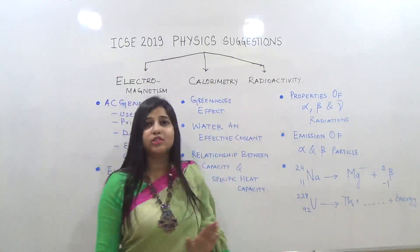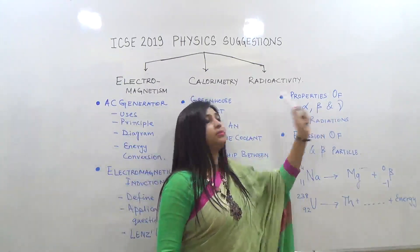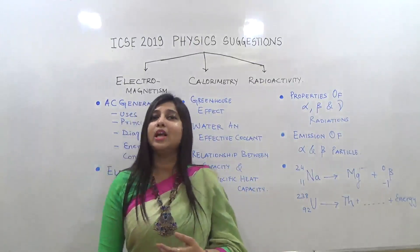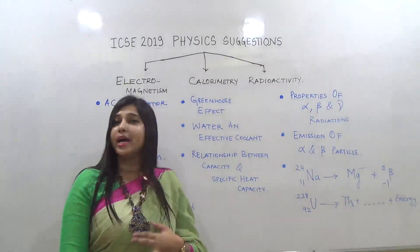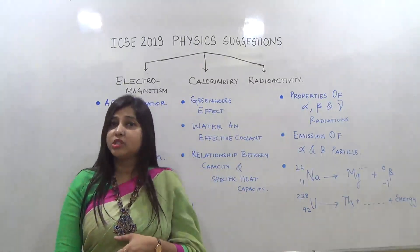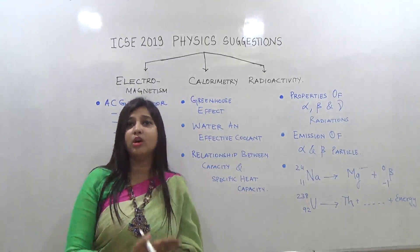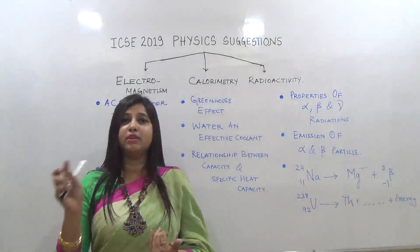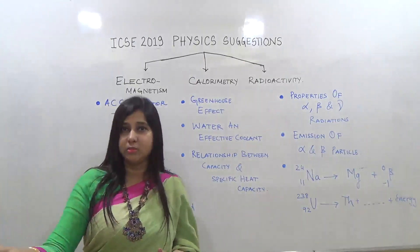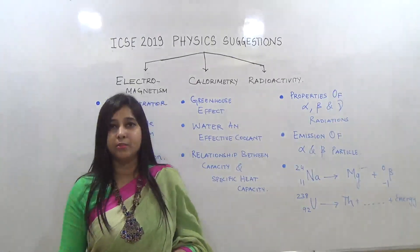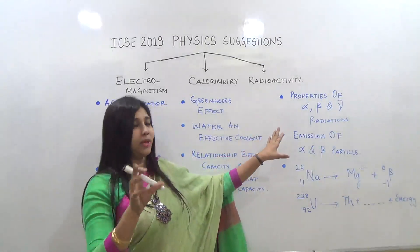Now let's move to the last topic: radioactivity. Please go through the properties of alpha, beta, and gamma radiations — particularly penetrating power, ionizing power, and biological damage. Try to learn them in increasing or decreasing order, because questions may ask you to arrange alpha, beta, and gamma in increasing order of penetrating power or decreasing order of ionizing power.